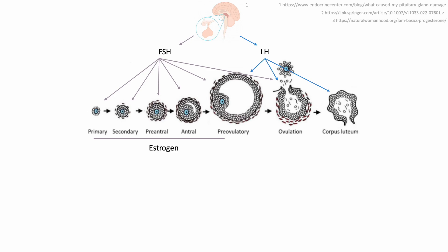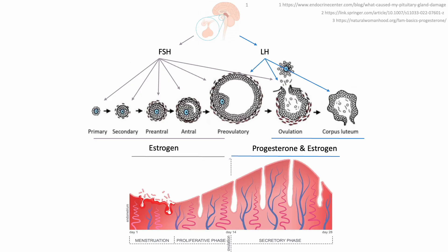FSH and LH also stimulate the production of other hormones. FSH stimulates estrogen production, and the LH surge, which triggers ovulation, signals to the corpus luteum to produce progesterone to sustain the endometrium in the secretory phase for the event of fertilization. These hormones, in turn, have a regulatory effect as well. Decreasing FSH and increasing LH is part of the role of estrogen, and this allows the body to maintain progesterone levels until day 28 of the menstrual cycle. If there's a viable pregnancy implanted, it begins producing beta-HCG, which signals to the corpus luteum to stick around and continue producing progesterone.